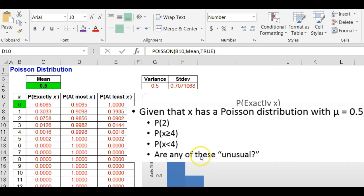Are any of these unusual? Let's look at this again. Probability of exactly two. No, that's greater than 0.05. That's not unusual.